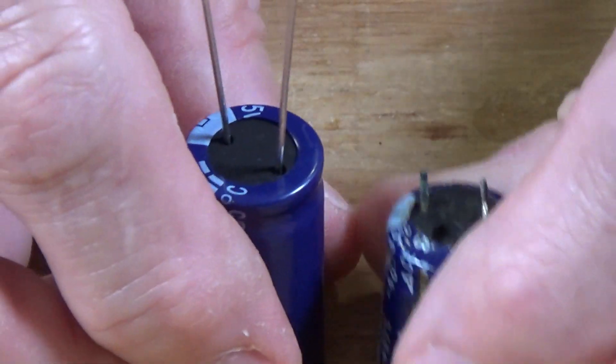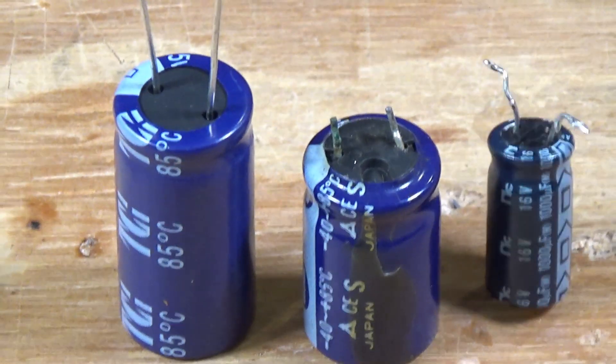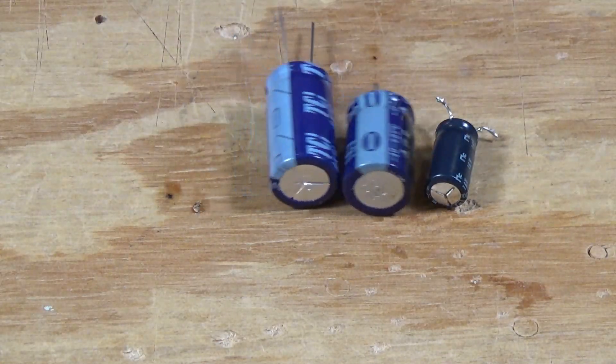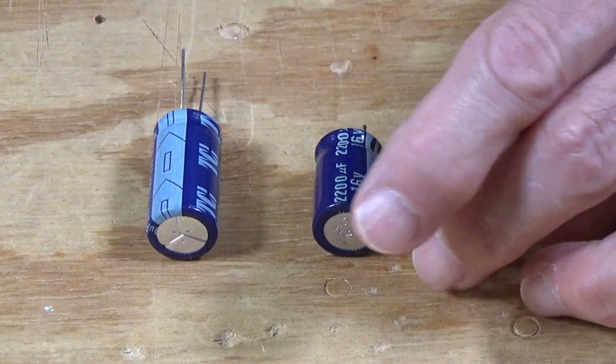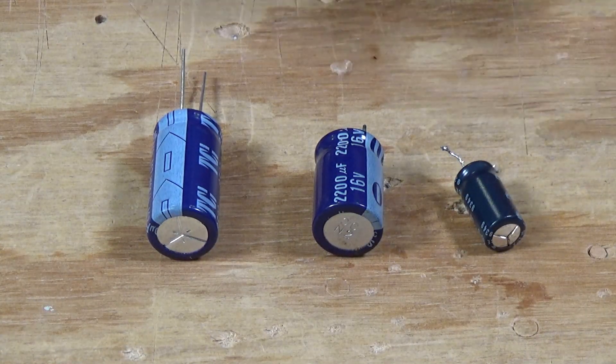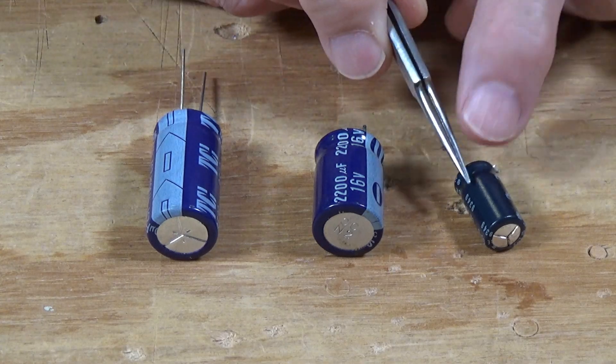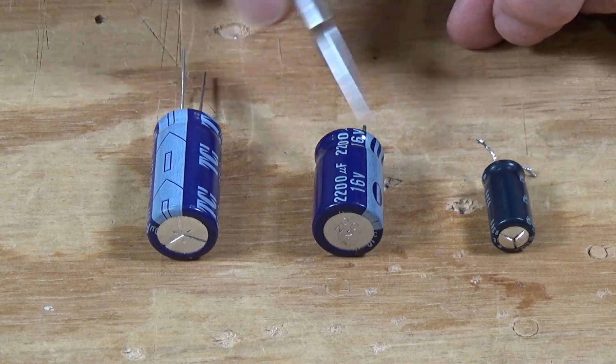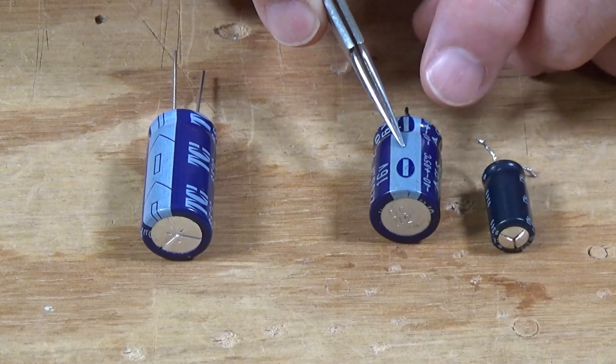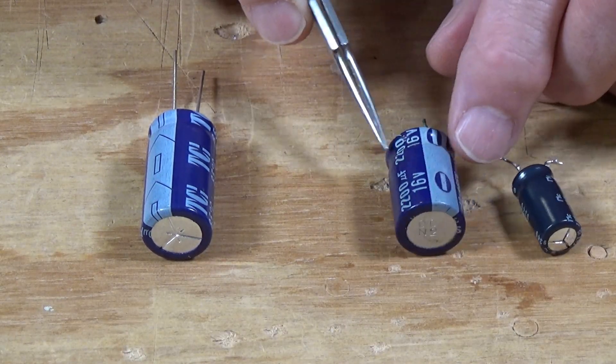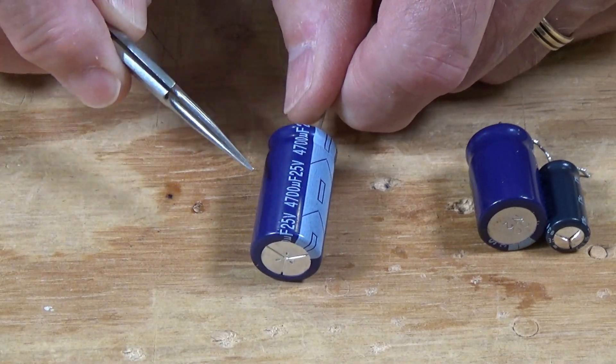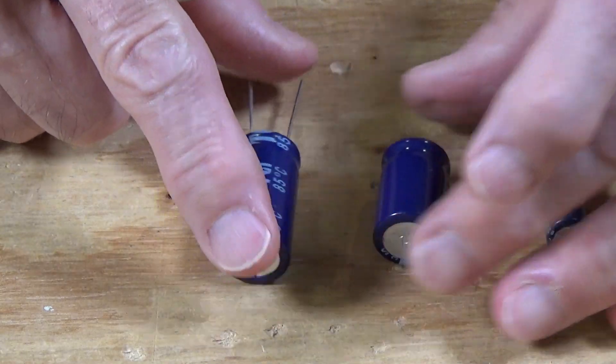The next component that's important, and I'm going to zoom out for these a little bit, are these capacitors. Now these are your standard polarized capacitors. This one here is a 1000 microfarad capacitor rated at 16 volts. This one here is a 2200 microfarad at 16 volts. And this one here is 4700 microfarads at 25 volts. Now what's the difference?